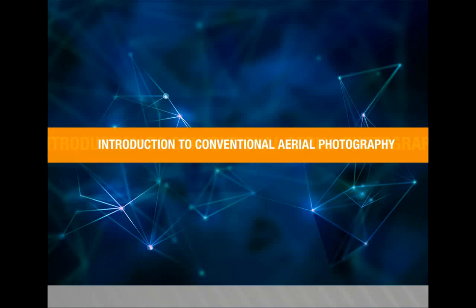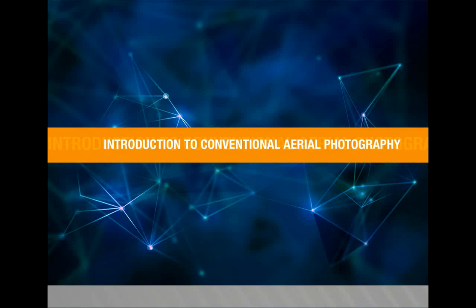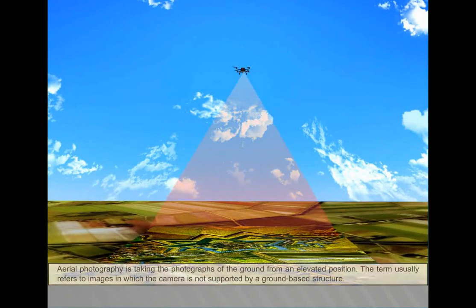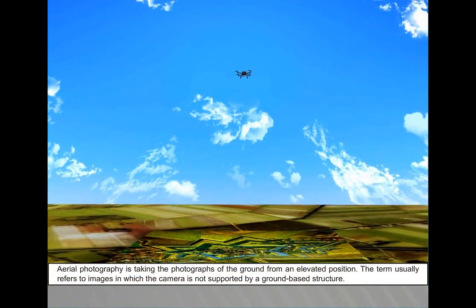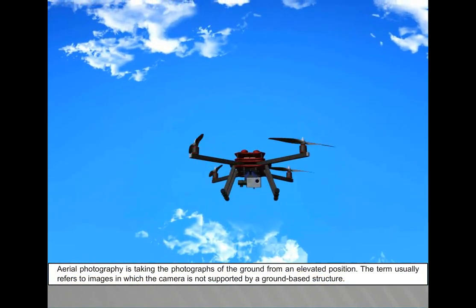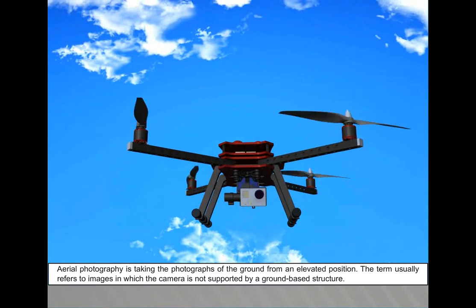Introduction to conventional aerial photography. Aerial photography is taking photographs of the ground from an elevated position. The term usually refers to images in which the camera is not supported by a ground-based structure.